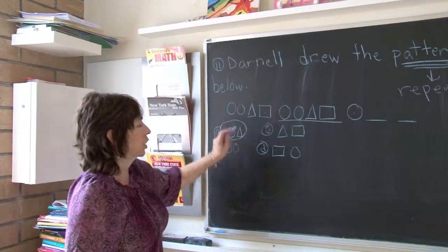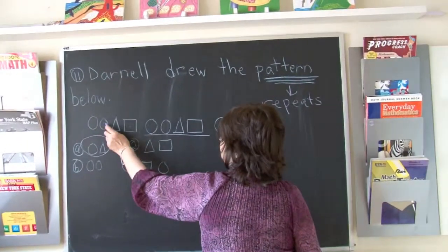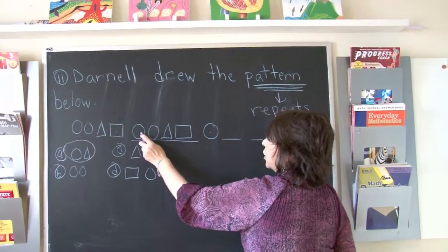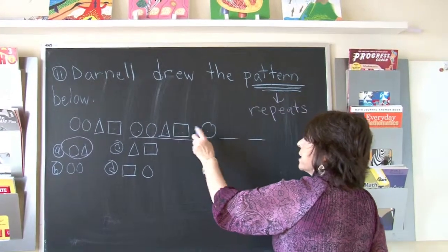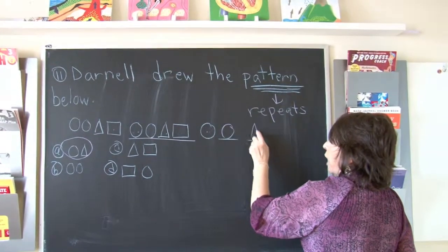It will be circle, triangle because it's circle, circle, triangle, square. Circle, circle, triangle, square. Circle, circle, triangle.